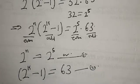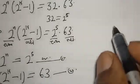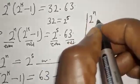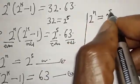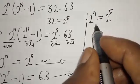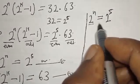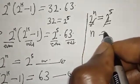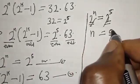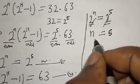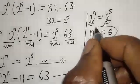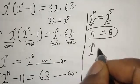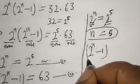From the first case, 2 raised to power n is equal to 2 raised to power 5. Since they have the same base, this is true, and therefore n is equal to 5.